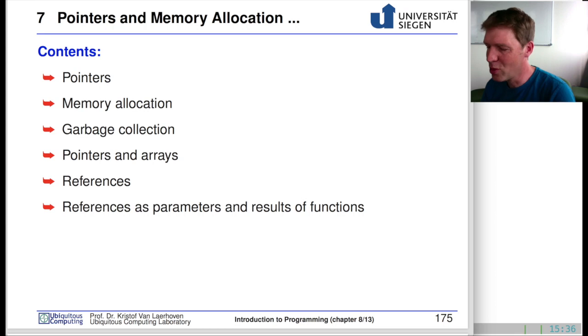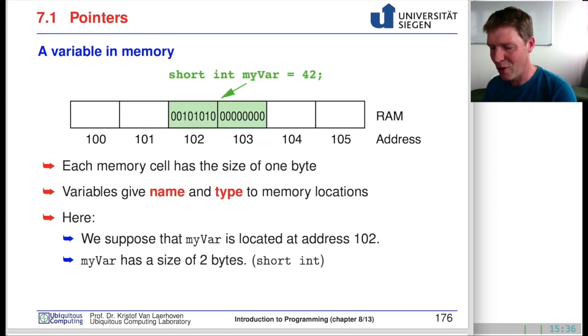We'll start by repeating what we already know. Whenever we create a bit of data in our program, for instance, a short integer called myVar, and we immediately assign it the value of 42, then we know that somewhere in our memory something happens.